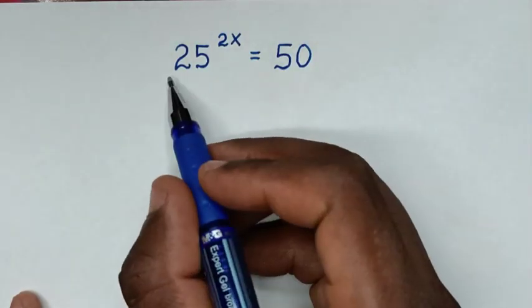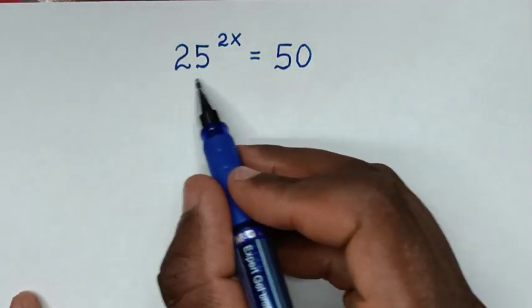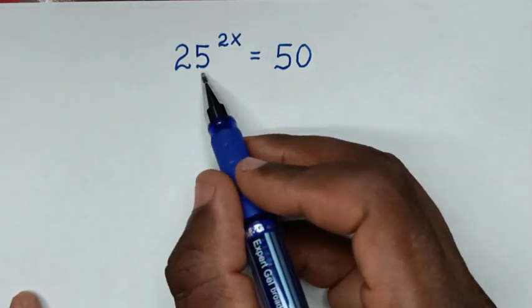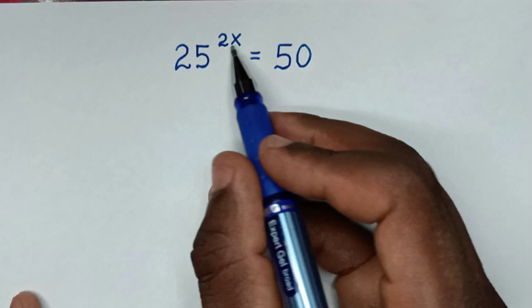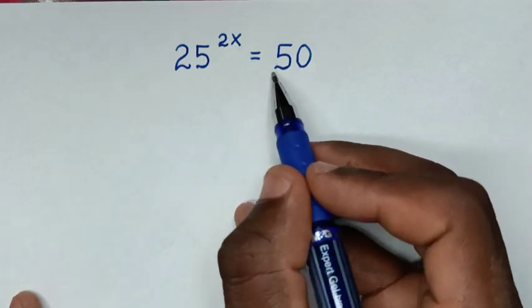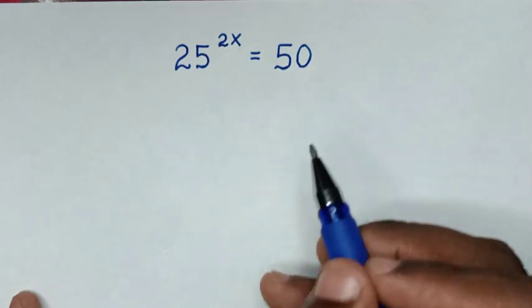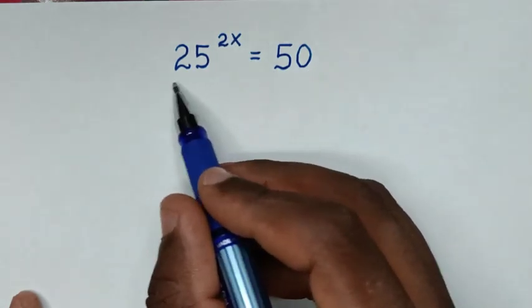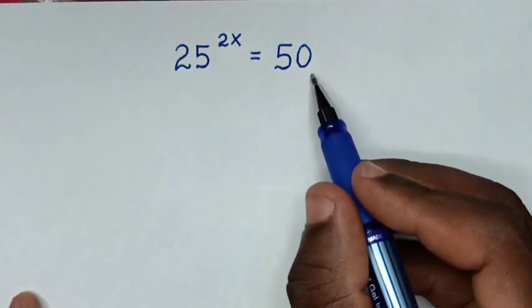Hello! You are welcome to solve this math problem: 25 to the power of 2x is equal to 50. We need to find the value of x from this equation.